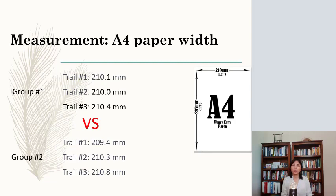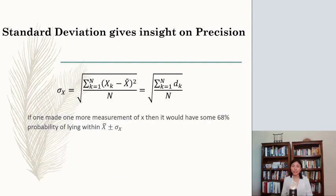So let's come to the A4 paper width measurement again. I asked two groups of students to take the measurement. And if you look at their data, they all have the same mean value, which means they have the same percent error. But if we look into details, all the data they took are different. So how do we know which group of data is better than the other?